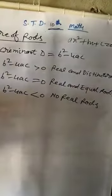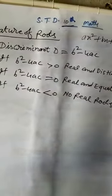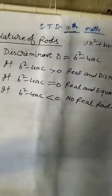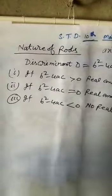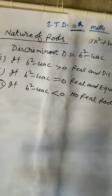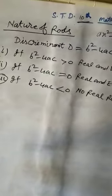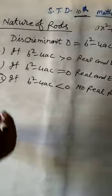Learn these three conditions and solve exercise 4.3: find the roots of the following quadratic equation if they exist by method of completing the square.